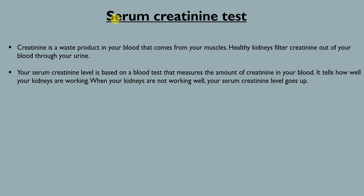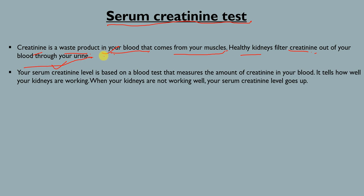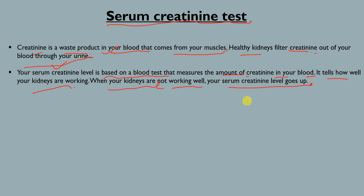Another kidney function test is the serum creatinine test. Creatinine is a waste product — an amino acid present in your blood that comes from your muscles. Healthy kidneys filter creatinine out of your blood through your urine. The serum creatinine test is a blood test that measures the amount of creatinine in your blood and tells how well your kidneys are working. When your kidneys are not working properly, your serum creatinine level goes up.